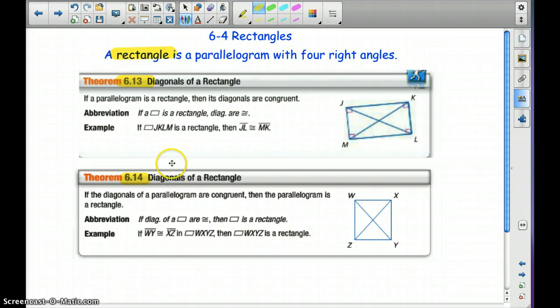6.13 is if a parallelogram is a rectangle, then its diagonals, so JL and MK, are congruent to one another. And here's the abbreviation you can write underneath 6.13.